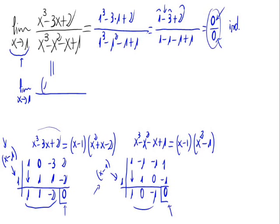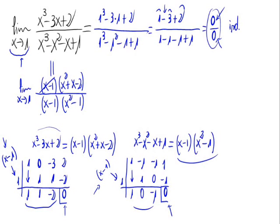Let's rewrite this. The numerator is x minus 1 times x squared plus x minus 2, and the denominator is x minus 1 times x squared minus 1. We can cancel out both x minus 1 terms, and the limit becomes x squared plus x minus 2 divided by x squared minus 1.